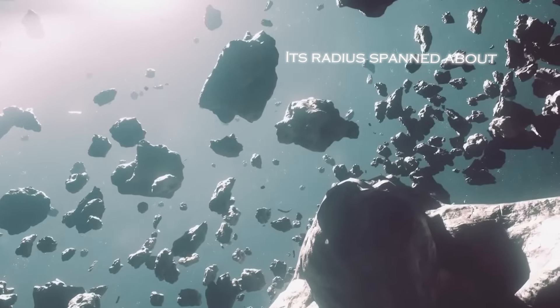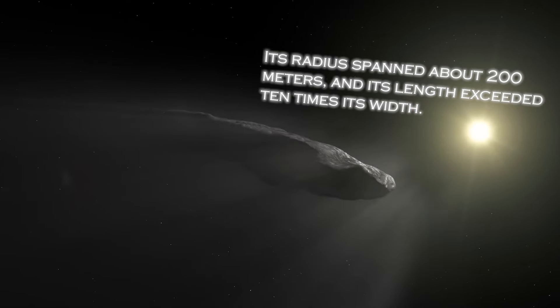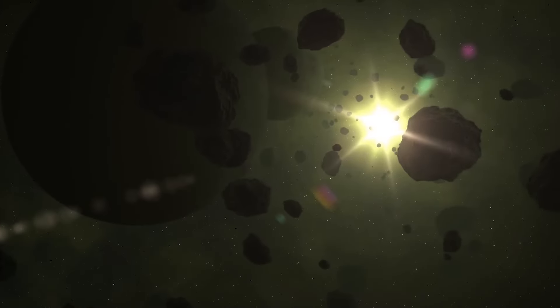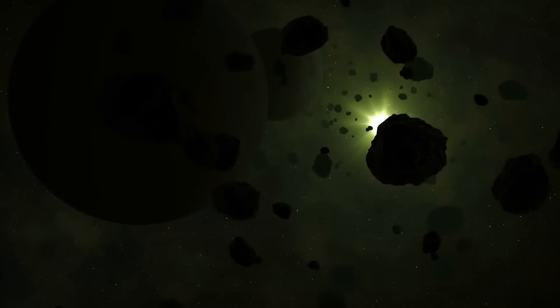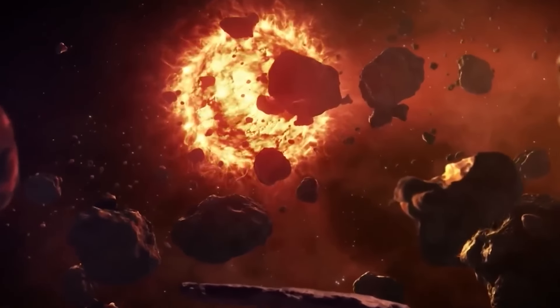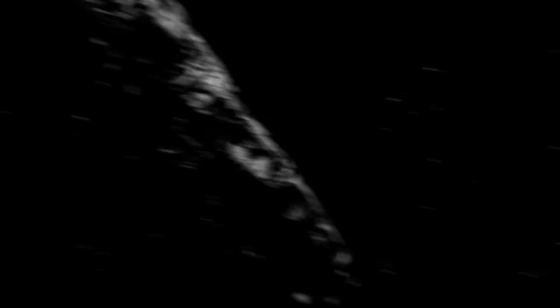Its radius spanned about 200 meters, and its length exceeded 10 times its width. These dimensions are exceptional when considering its presence in the interior of our solar system. Normally, our minds associate celestial objects with spherical shapes, influenced by the gravitational forces operating within them.